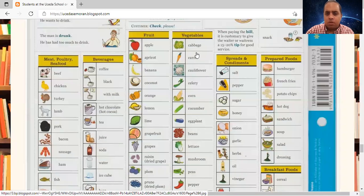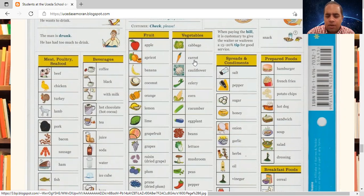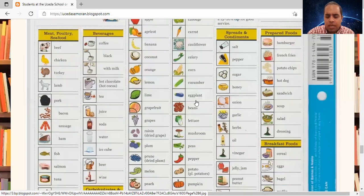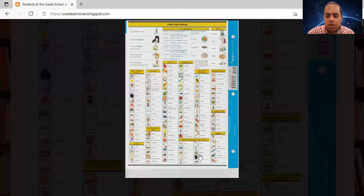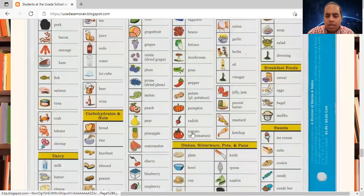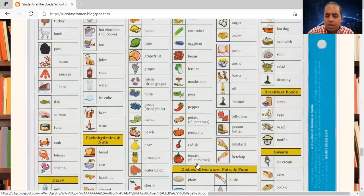Again, I will repeat vegetables. Cabbage. Carrot. Cauliflower. Celery. Corn. Cucumber. Eggplant. Beans. Lettuce. Mushroom. Peas. Pepper. Potato. Potatoes. Pumpkin. Radish. Tomato. Tomatoes.